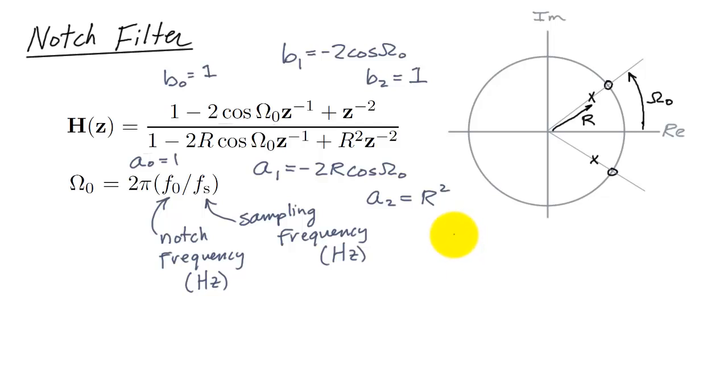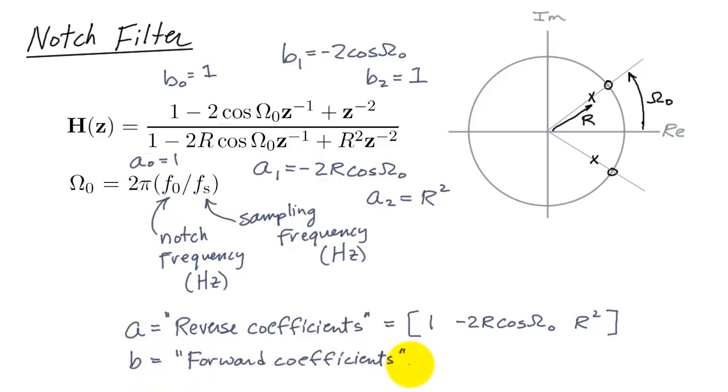Now for reasons related to the way digital filters are implemented, we call the A coefficients the reverse coefficients. And this is the way LabVIEW refers to those. The reverse coefficients for us then would be the values 1, minus 2R cosine theta naught, and then R squared. So we order them as A0 through A2. The B coefficients are referred to as the forward coefficients. These are ordered in the same way. We start with B0, which is 1, and go all the way up to B2, which also is 1.